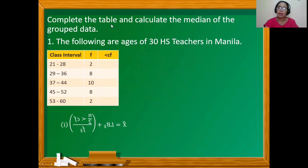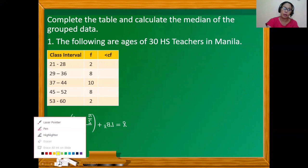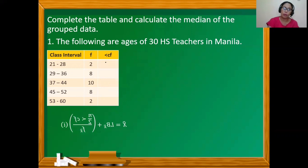Let's work on example exercises. We're going to complete the table and calculate the median of the grouped data. The first dataset gives the ages of 30 high school teachers in Manila. The less-than cf is obtained by cumulatively adding the frequencies from top to bottom: 2, then 2 + 8 = 10, then 10 + 10 = 20, then 20 + 8 = 28, then 28 + 2 = 30.